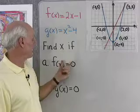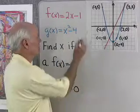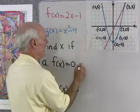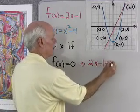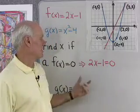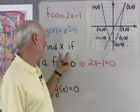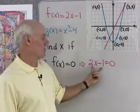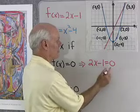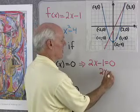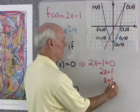Let's find x if f is equal to 0. If f is equal to 0, that means that 2x minus 1 is equal to 0. So we're asking for the value of x that makes y equal to 0. When we say f is equal to 0, we mean y is equal to 0. So we'll add 1 to both sides, we get 2x is equal to 1. Divide both sides by 2, x is equal to 1 half.